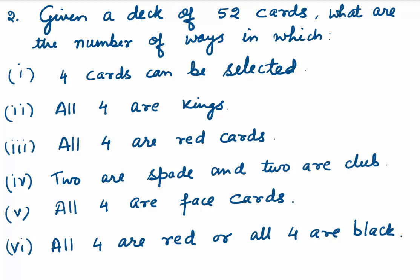In the second question, we have a deck of 52 cards and are asked to find the number of ways to select: first, any 4 cards out of 52; second, all four are kings; third, all four are red cards; fourth, two are spades and two are clubs; fifth, all four are face cards; and sixth, all four are red or all four are black.